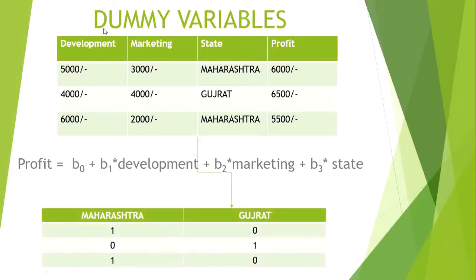So how many categories are here? One is Maharashtra and two is Gujarat. So we create two dummy variable columns: one for Maharashtra and one for Gujarat. Where the categorical data is present, we give 1. So if we consider the Maharashtra column and the row is Maharashtra, the categorical data is present, so we give 1. For the Gujarat column in that same row, Maharashtra is absent, so it will be 0. And vice versa.